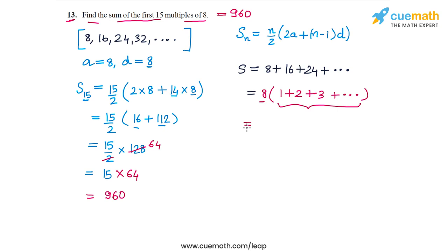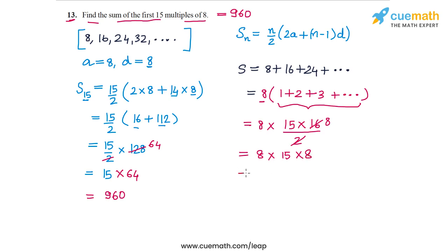We apply the formula for the sum of the first n natural numbers: n×(n+1)/2. In this case it will be 8 × (15×16/2) = 8 × (15×8) = 8 × 120... giving 15 × 64 = 960. So once again we get 960. Regardless of which method we use, the sum of the first 15 multiples of 8 is 960.